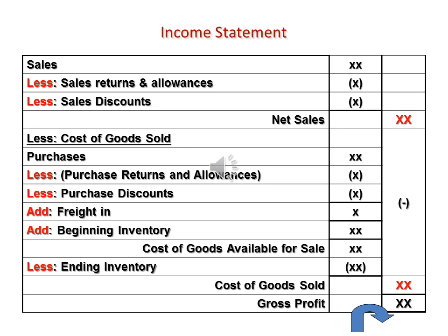The cost of goods sold can be calculated as follows: start with Purchases during the period, less purchase returns and allowances, less purchase discounts, add freight in or transportation in, add beginning inventory, to arrive at cost of goods available for sale, then less ending inventory.